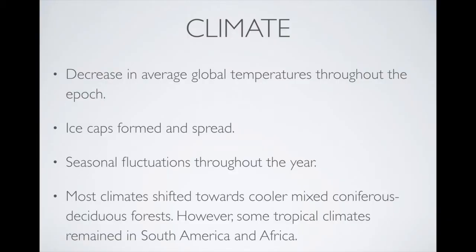The climate of the Oligocene Epoch experienced notable changes: average global temperatures lowered and it became much more arid and dry. The reason these things happened was because of the South American and Australian plates separating from Antarctica, which created an ocean passage along the southern part of the Earth.